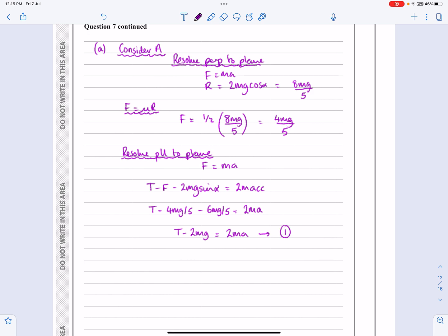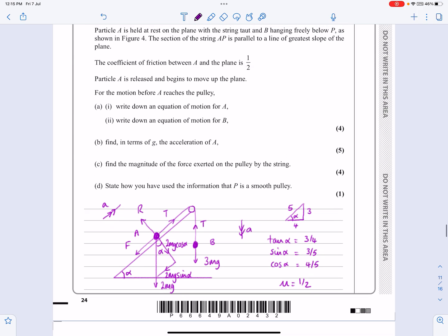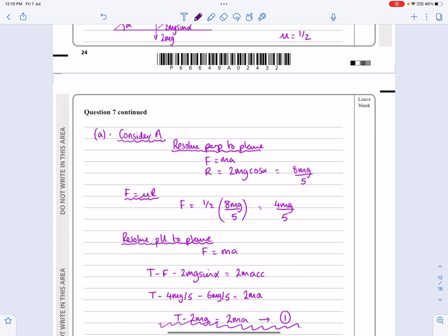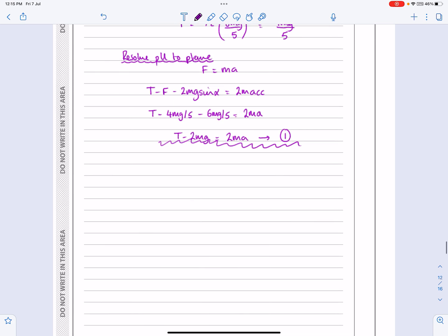So that's giving me that one there. Put in all the information I know. So I know that F is 4mg over 5. And I know that sin α is 3 fifths, so this is going to be 6mg over 5, is equal to 2ma. And tidying that up then, I can say T minus, what's that, 10mg over 5, or 10mg over 5 is 2mg, isn't it? So T minus 2mg equals 2ma. I'm going to label that number 1, and in effect, that's my first equation of motion.